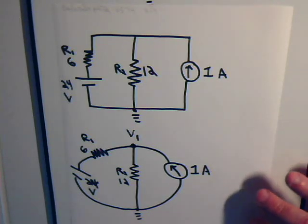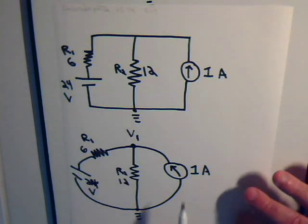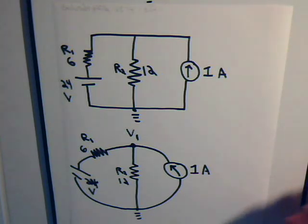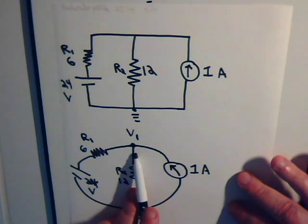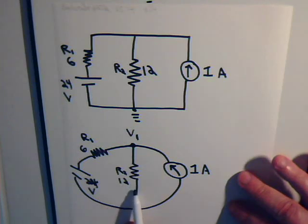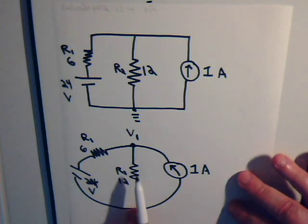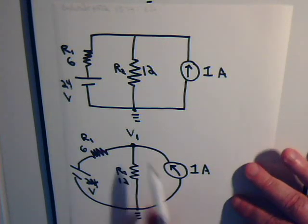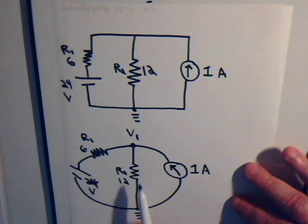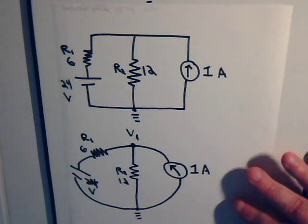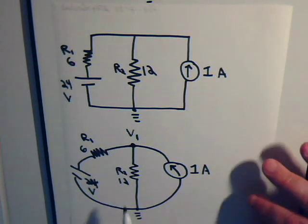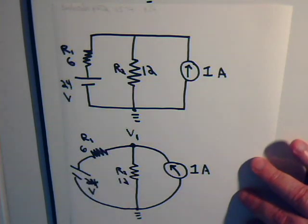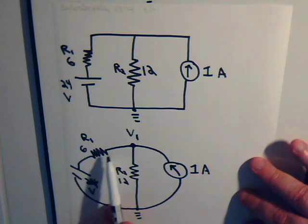So here, for this node, there would be minus one amp of current flowing into it. And then the current flowing, we're assuming for the moment, away from the node through this resistor, well, that current would be equal to V1 divided by the value of this resistor, V1 divided by 12.